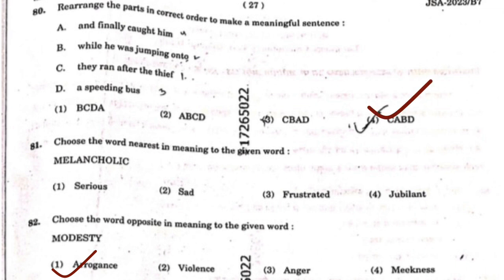Question 81: Choose the word nearest in meaning to the given word. The word is 'melancholic.' The options are serious, sad, frustrated, or jubilant. The correct answer is the second option: sad. Melancholic means a feeling of sadness, so sad is the nearest synonym.